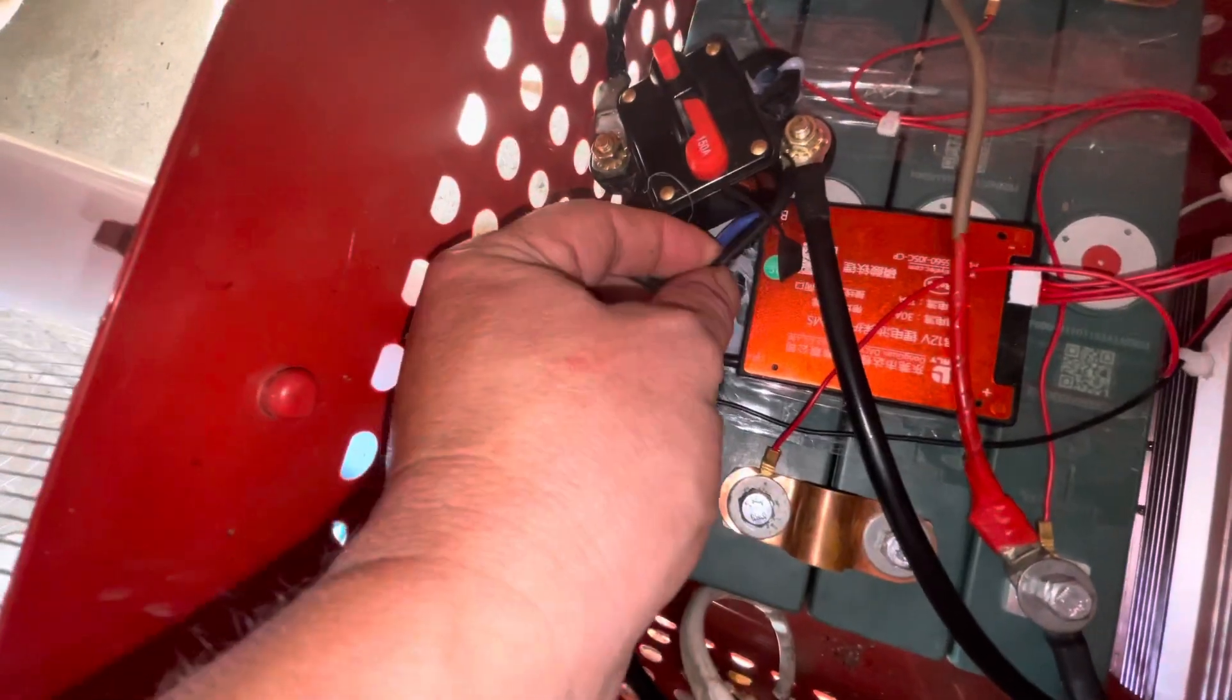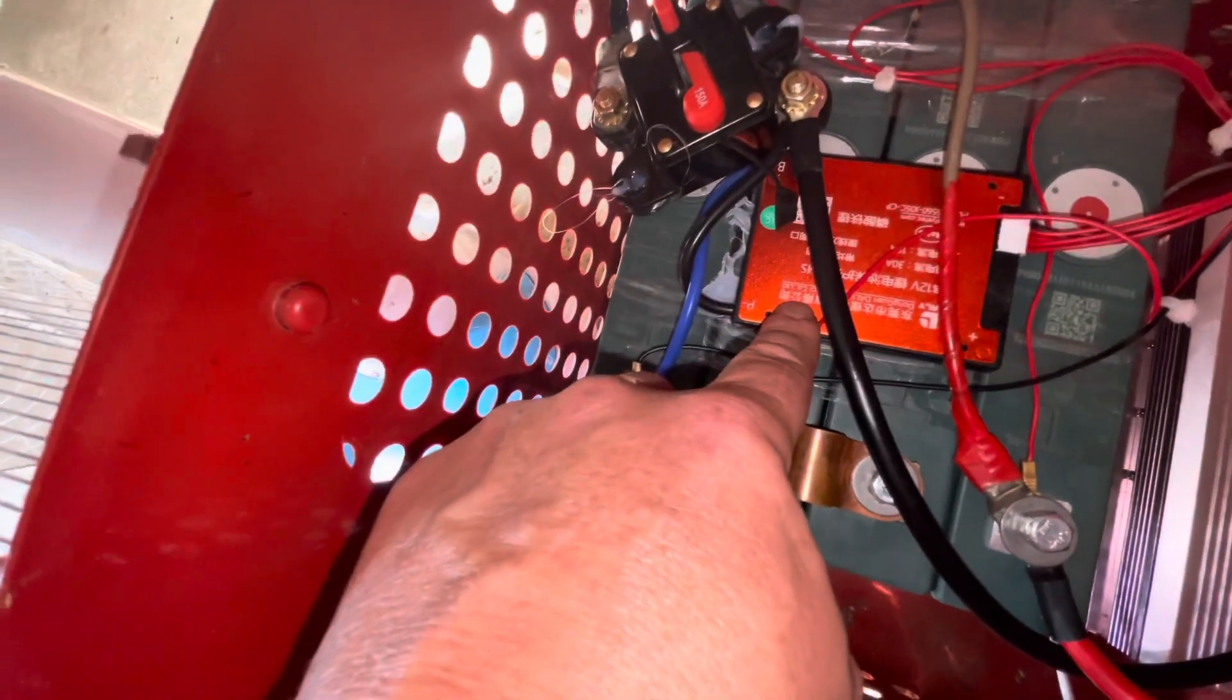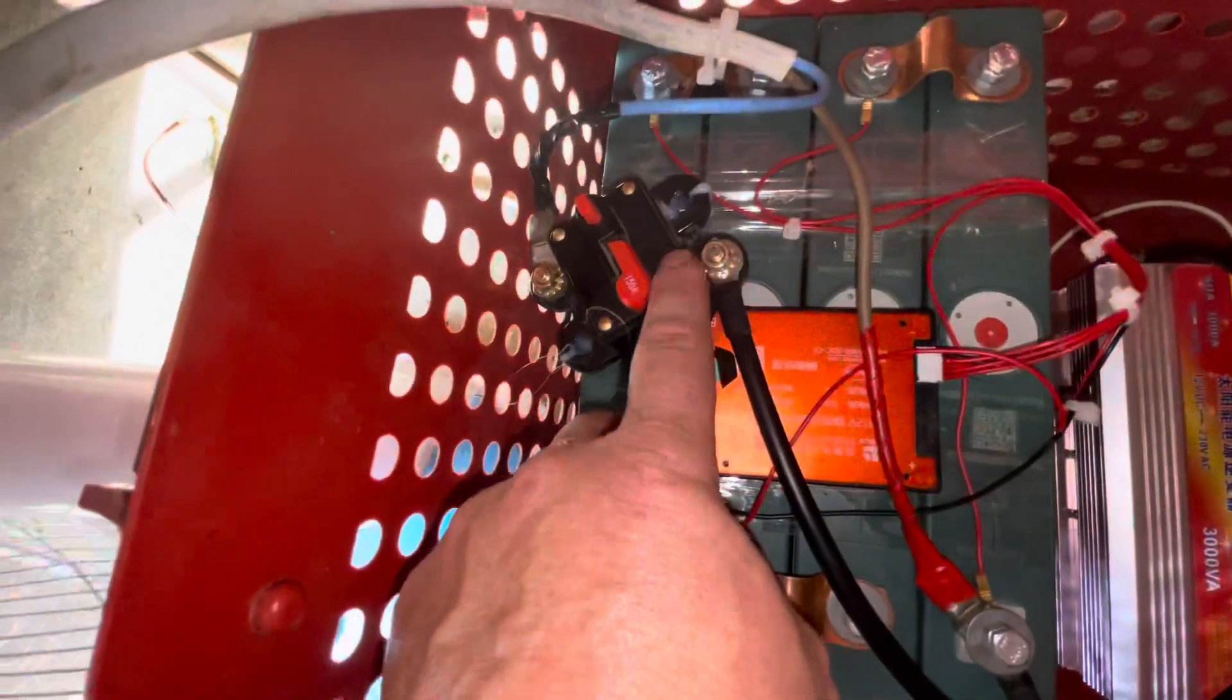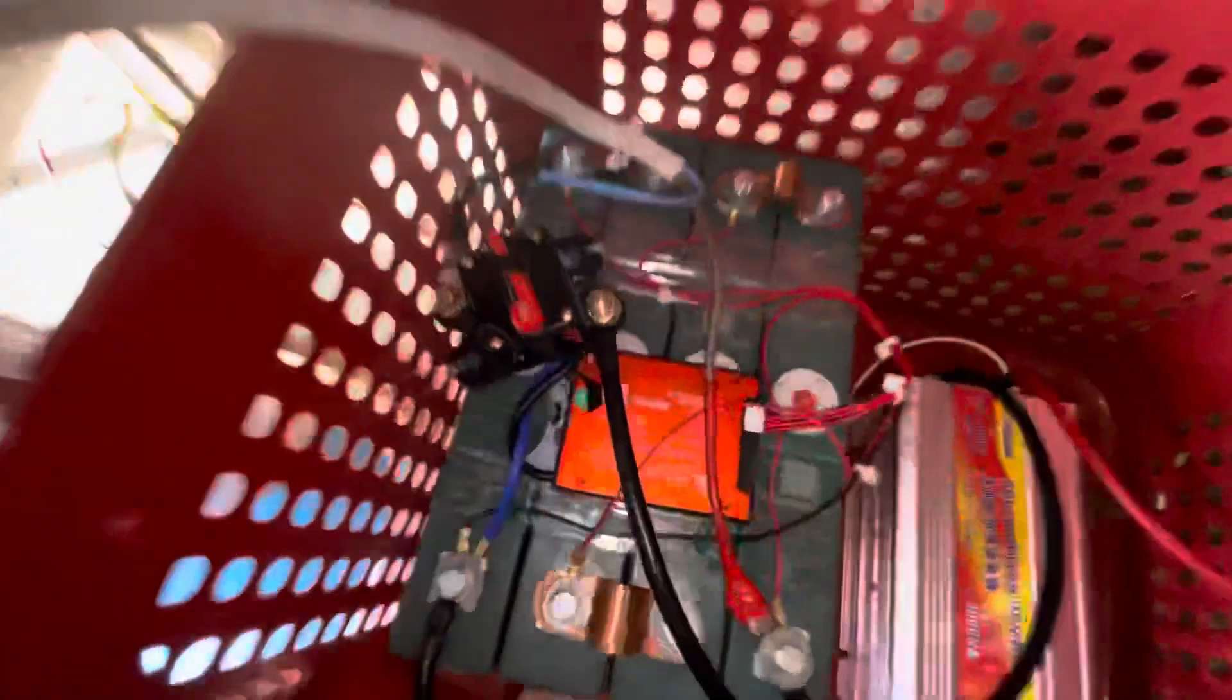And then we've got this black which goes into the Daly BMS, then out of the Daly BMS onto the battery negative. So it's coming from the battery negative through the BMS, out of the BMS, and then it feeds the inverter and it feeds this fuse which then feeds all this. So you can understand that if the BMS opens the switch, nothing's going to work.